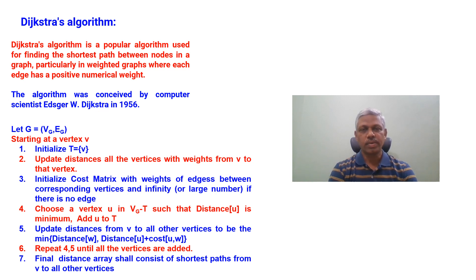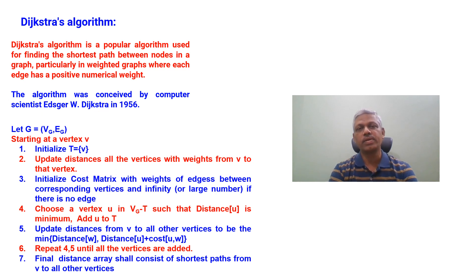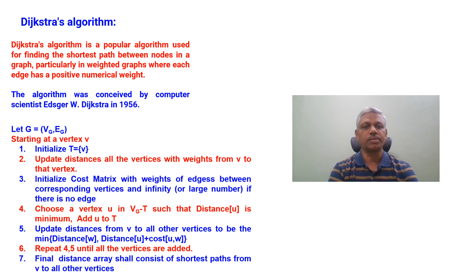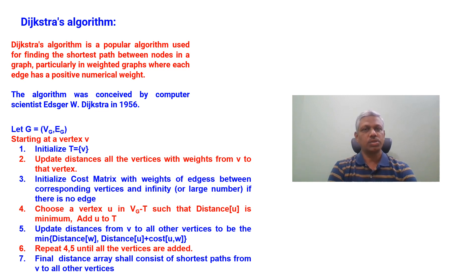We also initiate a cost matrix, which consists of the weights of the edges, and update the direct edges. If there is no direct edge between a pair of vertices, we add infinity theoretically — but for practical purposes, we add a very large number in the cost matrix.